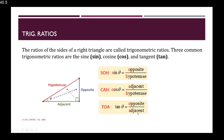Trig ratios. The ratios of the sides of a right-angle triangle are called trigonometric ratios. The three common trig ratios are sine, cos, and tan. In a right-angle triangle, if the angle is theta, then the adjacent is the side touching that angle — the green line. The opposite is the side opposite the angle — the blue line. The hypotenuse is always the side opposite the right angle. So: sine theta equals opposite over hypotenuse, cos theta equals adjacent over hypotenuse, and tan theta equals opposite over adjacent.